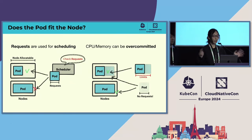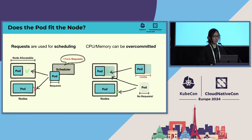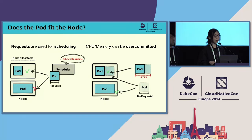On the other hand, the scheduler does not consider resource limits or actual usage, but a pod can use resources up to its limit. So CPU and memory can be overcommitted. As shown in the right diagram, a pod is allocated regardless of its resource limits.